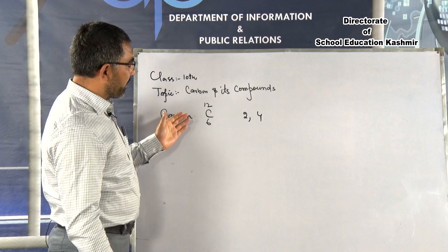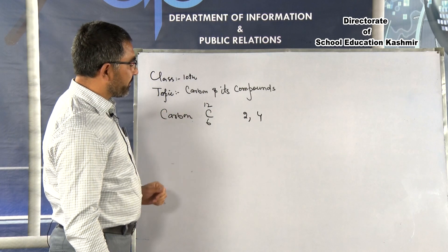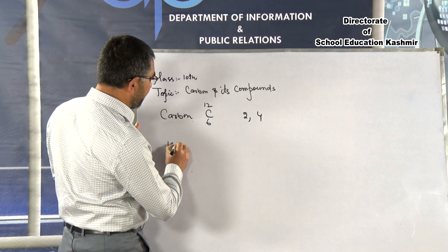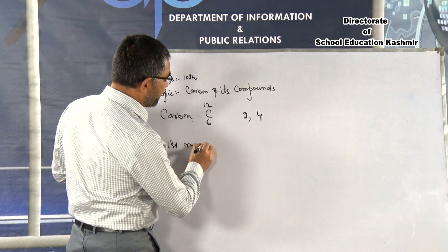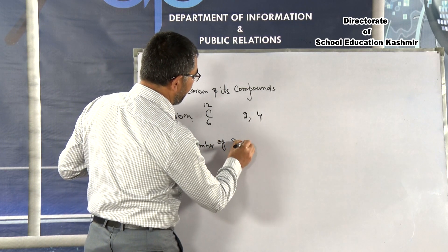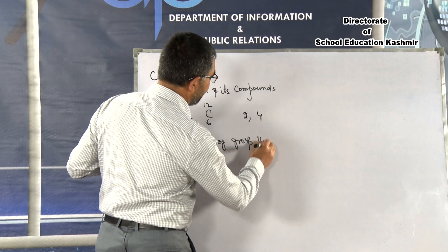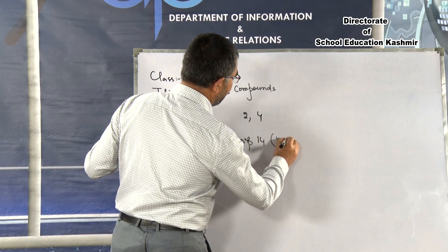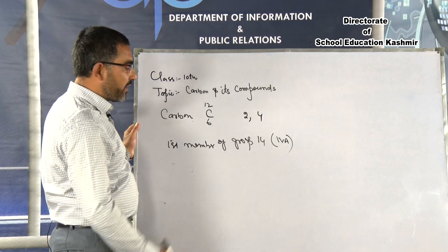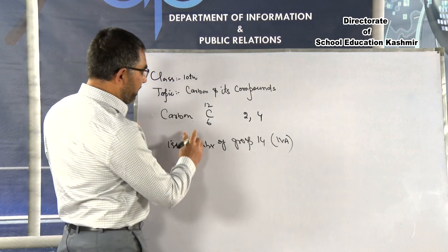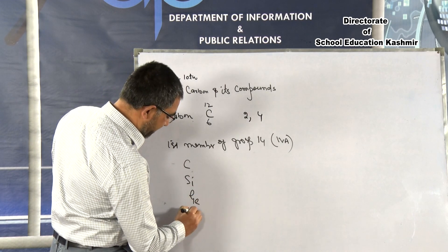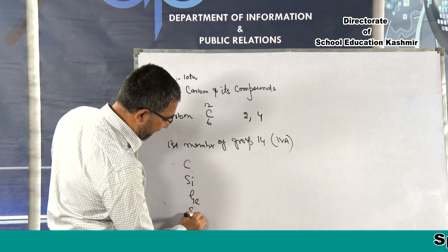In the periodic table, carbon's position is that it is the first member of group 14. The other elements in the group are Carbon, Silicon, Germanium, Tin, and Lead.